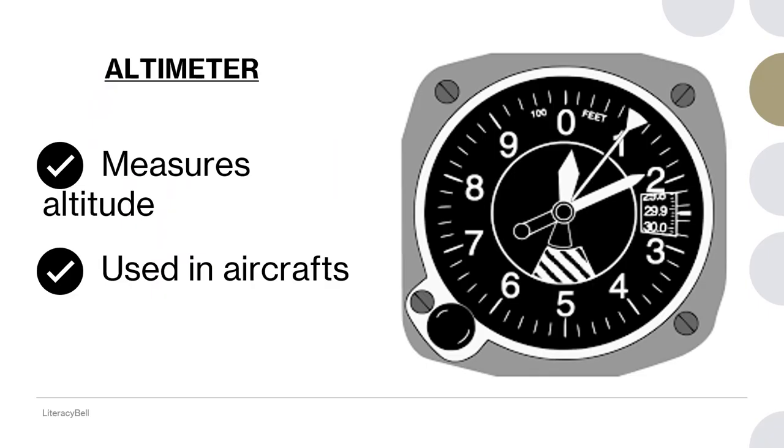The first device is altimeter. We break the word into two: alti plus meter. Alti means altitude and meter is to measure. What is altitude? Altitude means height of anything taken from sea level.